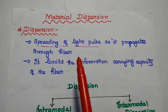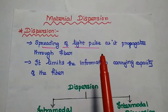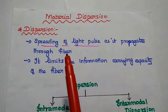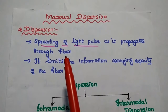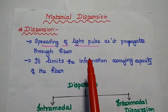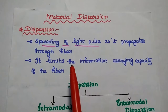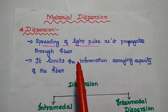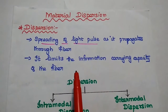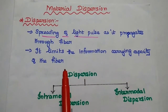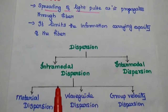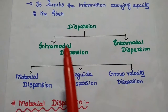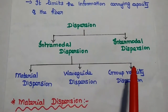Dear students, now we are going to discuss material dispersion in detail. Let's start with the basics of dispersion. Dispersion is nothing but the spreading of a light pulse as it propagates through the fiber. When the light signal is propagating through the fiber, there may be a spreading of the light pulse. It limits the information carrying capacity of the fiber. There are different types of dispersion: intramodal dispersion and intermodal dispersion.